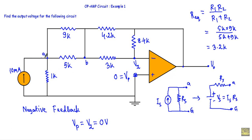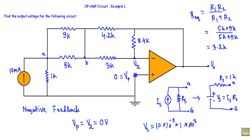I will replace the current source and parallel resistance with a voltage source in series with R_s, where R_s equals 1 kilo-ohm. The voltage source value is V_s = I_s × R_s = 10 mA × 1 kΩ = 10 volts. So with respect to terminal A and ground, the current source and parallel resistance are replaced by a 10-volt source in series with 1 kΩ. With respect to terminals A and B, the two resistors are replaced with 3.2 kΩ.